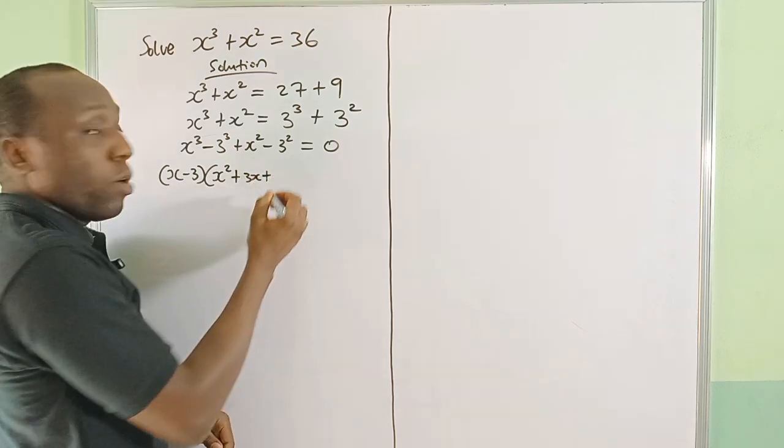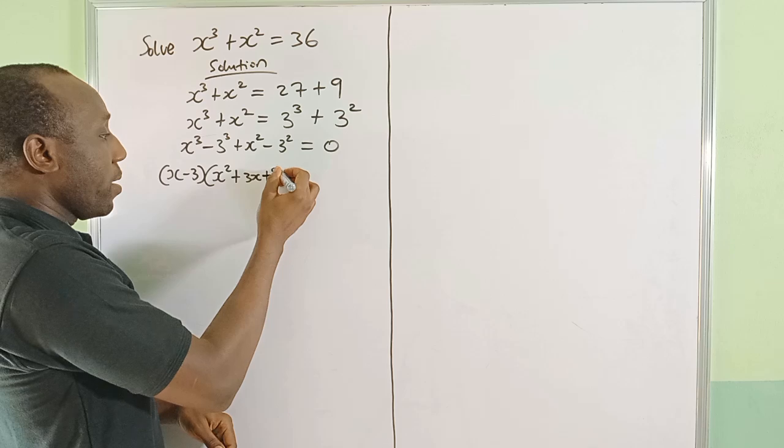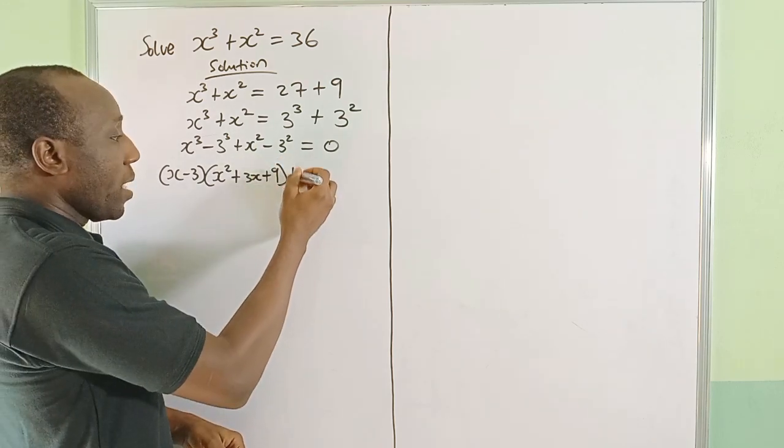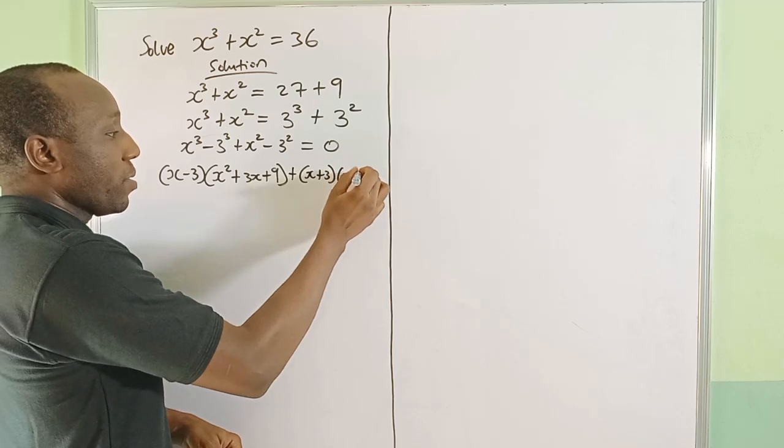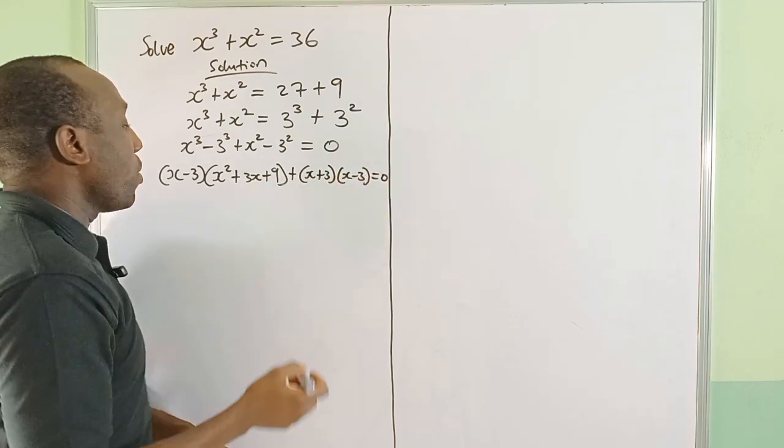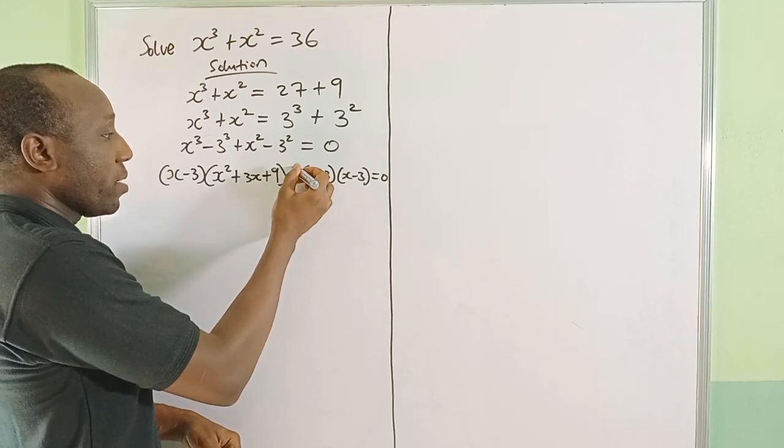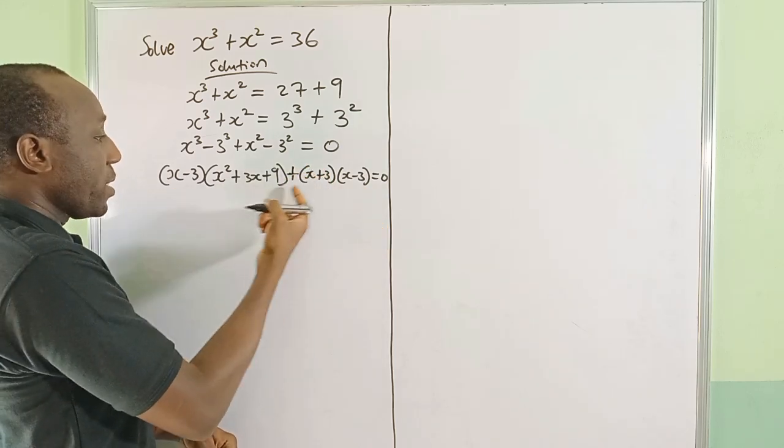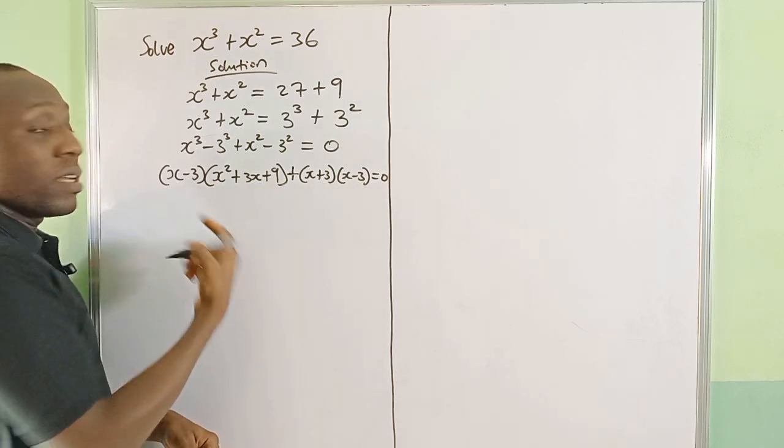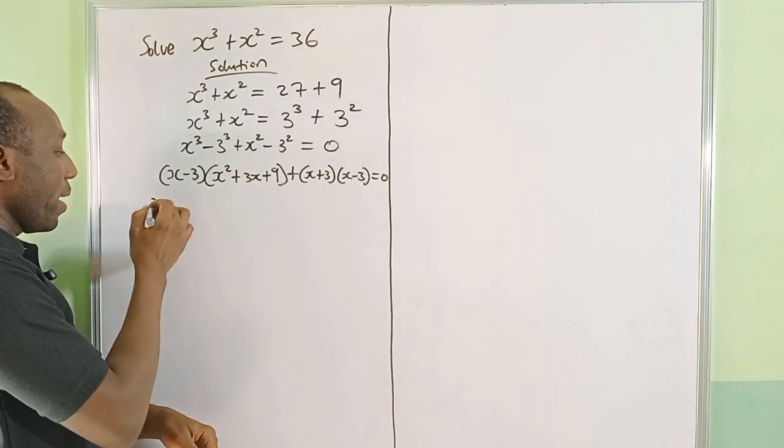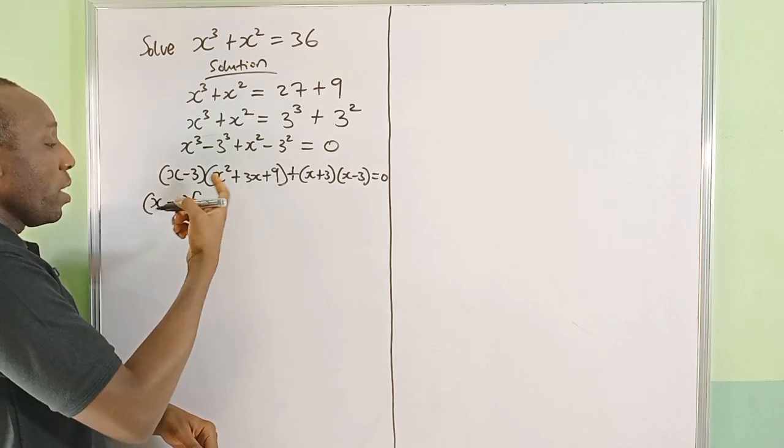Here I'm going to use difference of two squares: (x + 3)(x - 3) = 0. Now compare this first term and the second term. They are separated with the plus. What is common between this term and this term? x - 3. So let's factor that out.